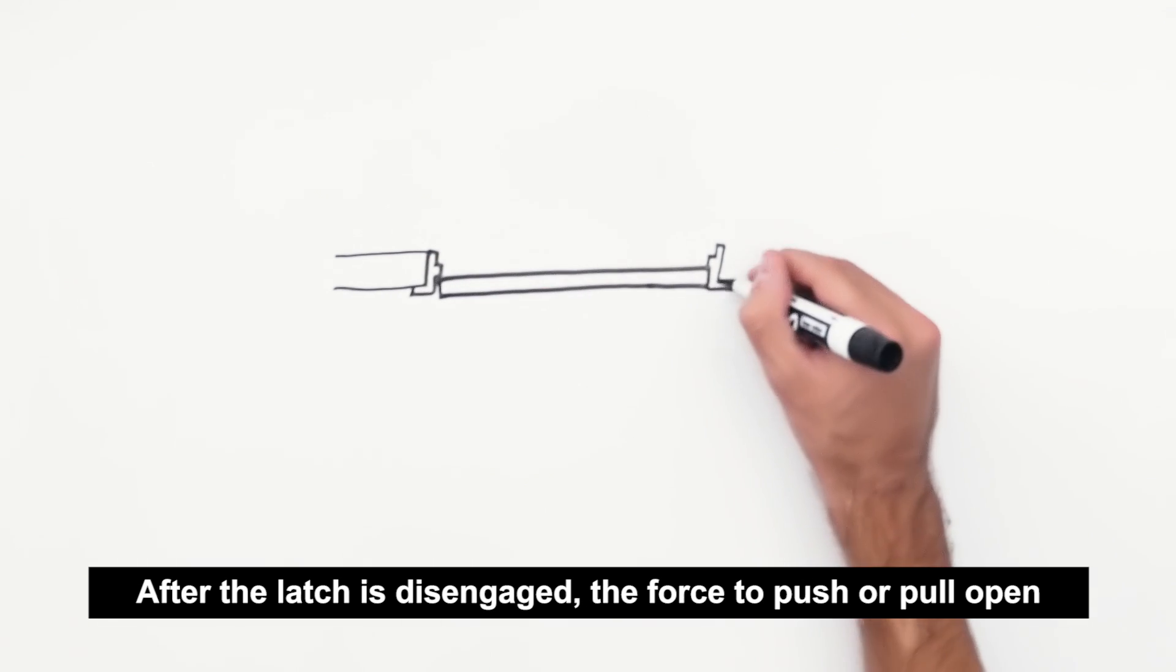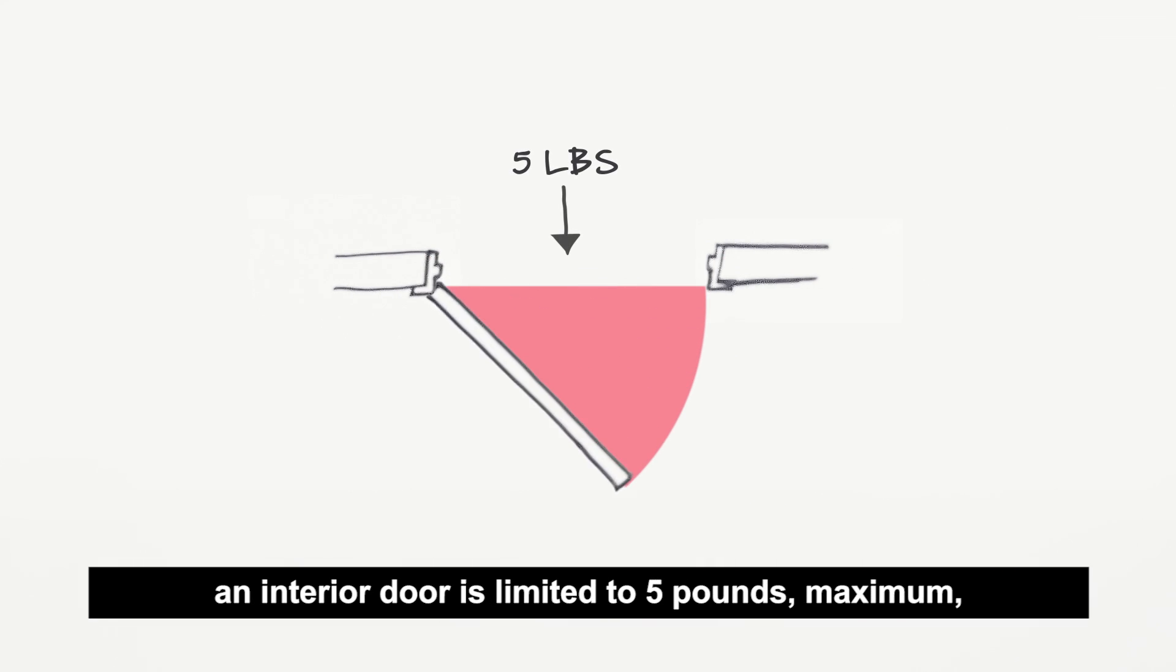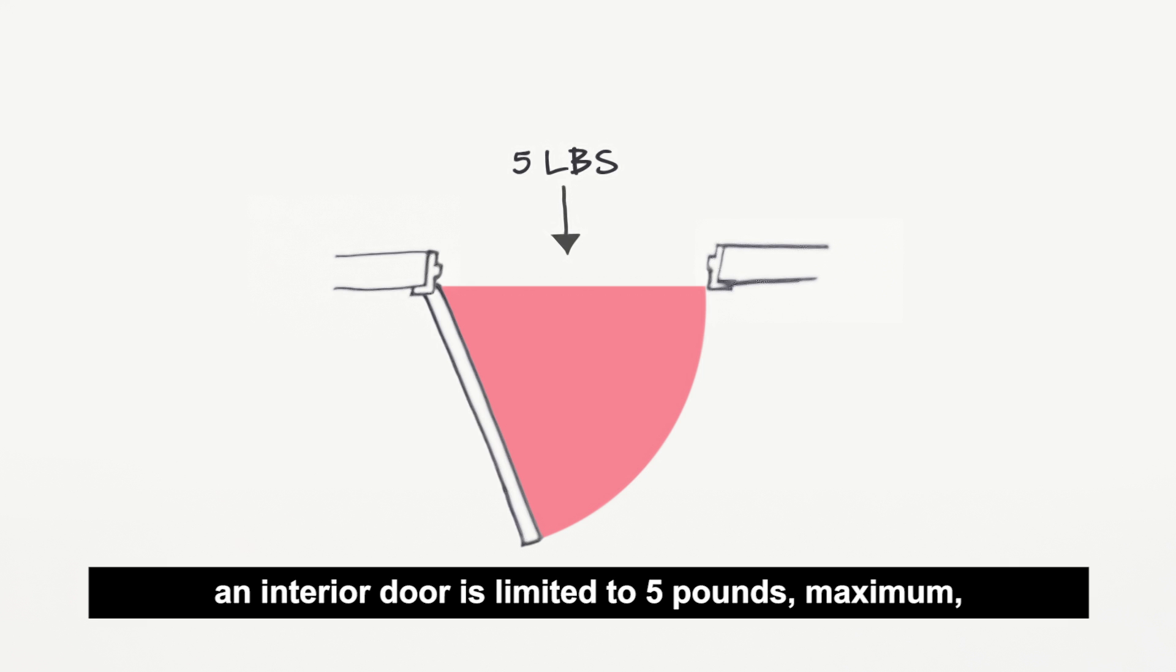After the latch is disengaged, the force to push or pull open an interior door is limited to five pounds maximum, with the exception of fire doors. This applies to interior swinging, sliding, and folding doors. Fire doors must have the minimum force required to reliably close and latch the door. Opening force for exterior doors may be addressed by the state or local jurisdiction, or by the applicable building code.